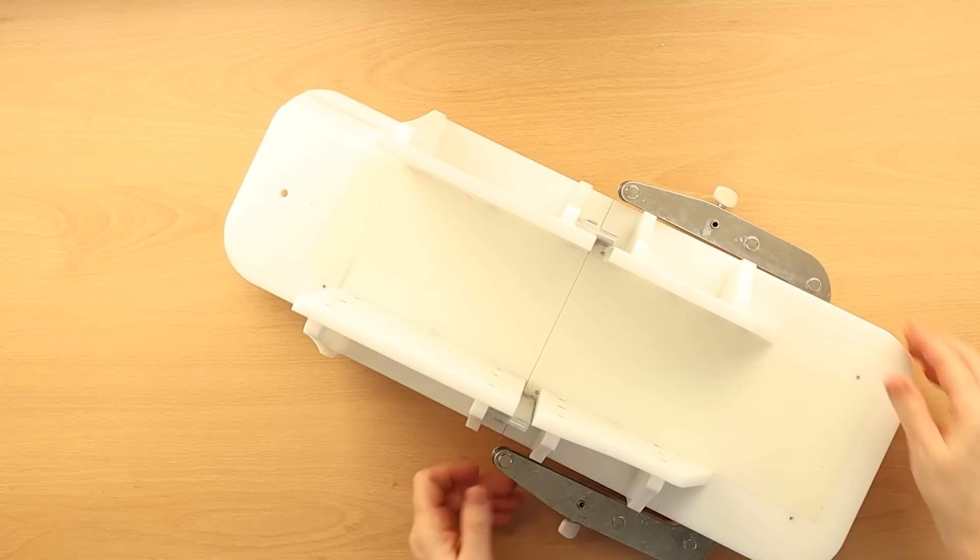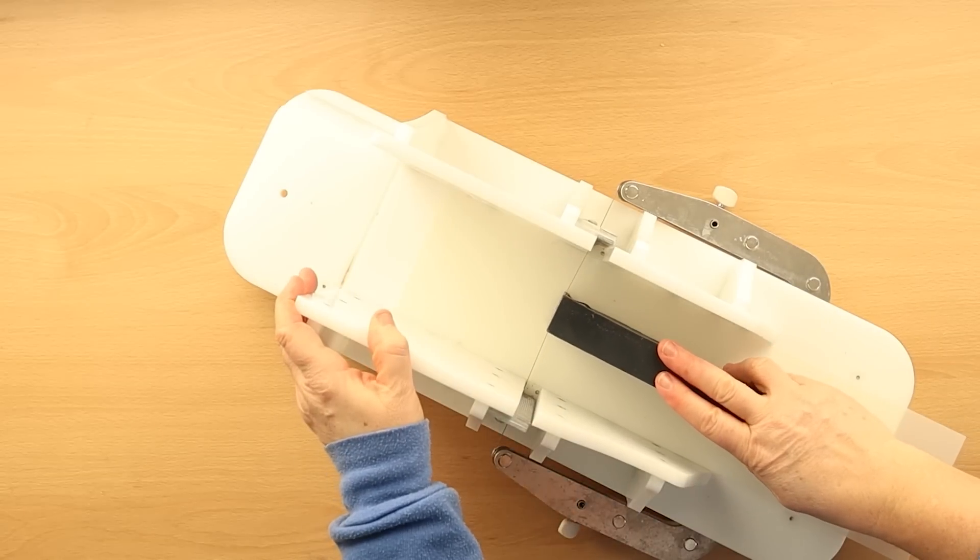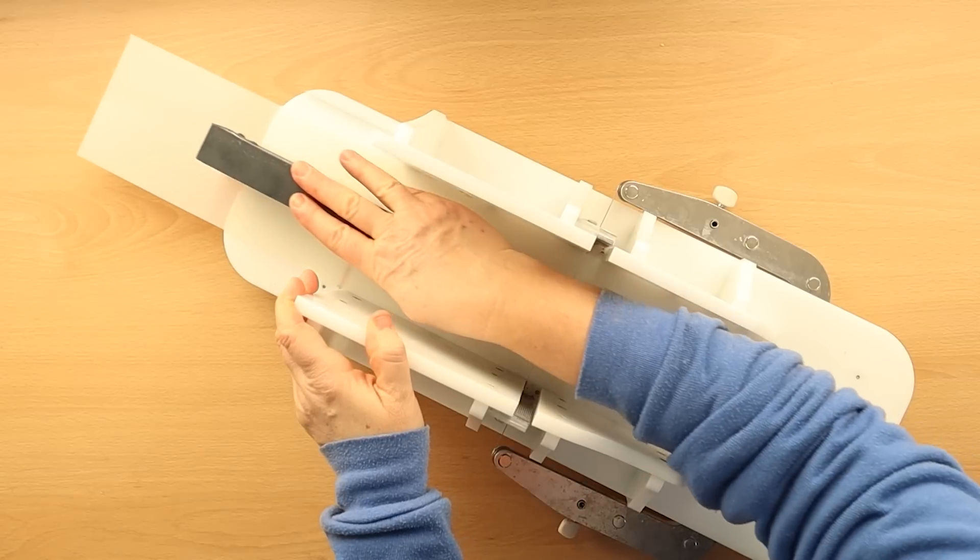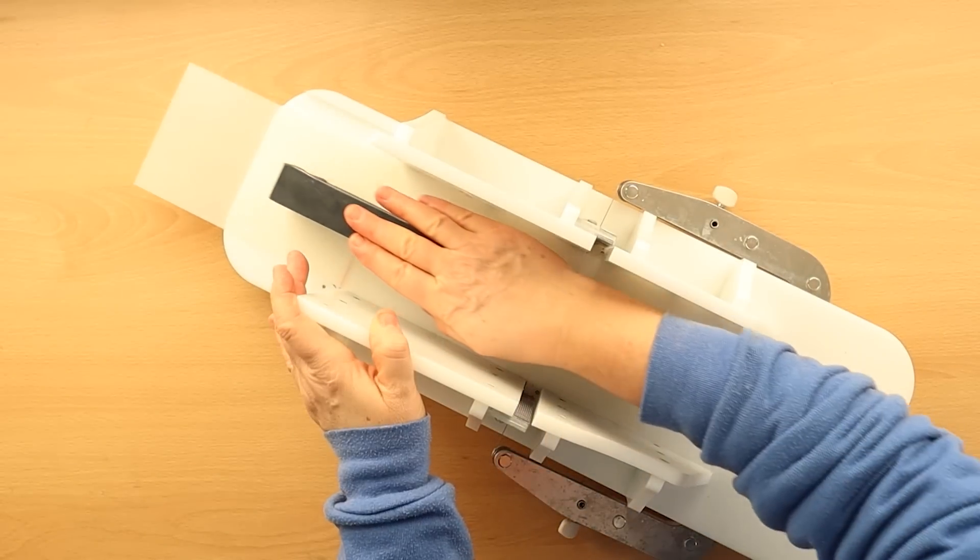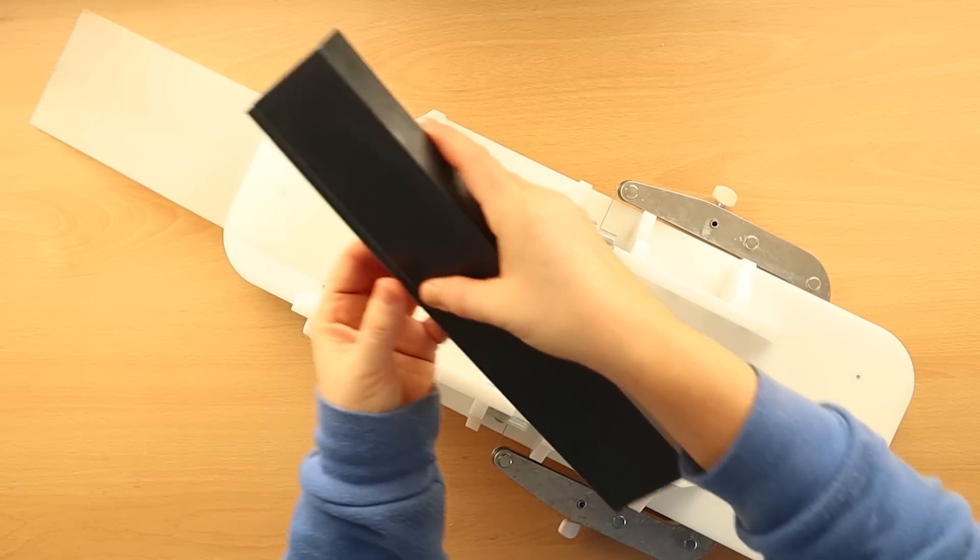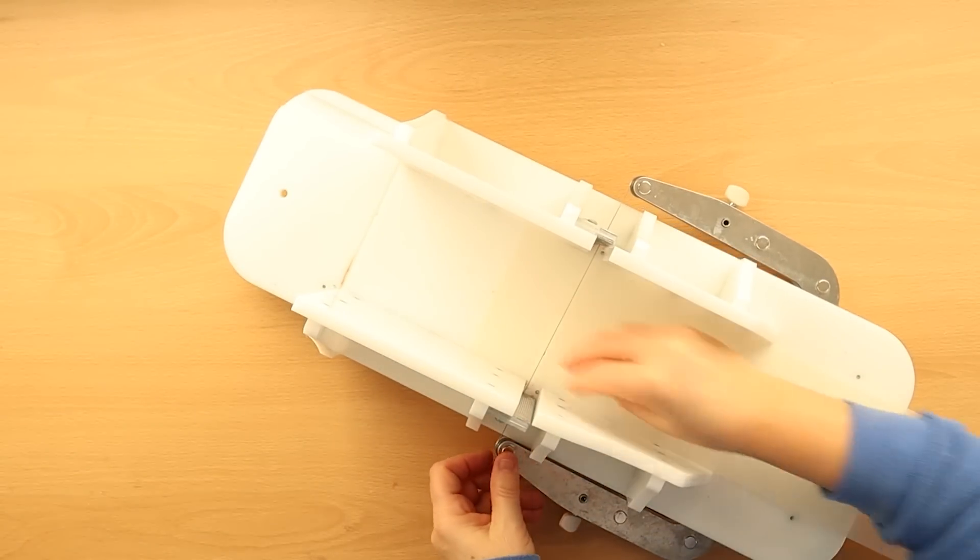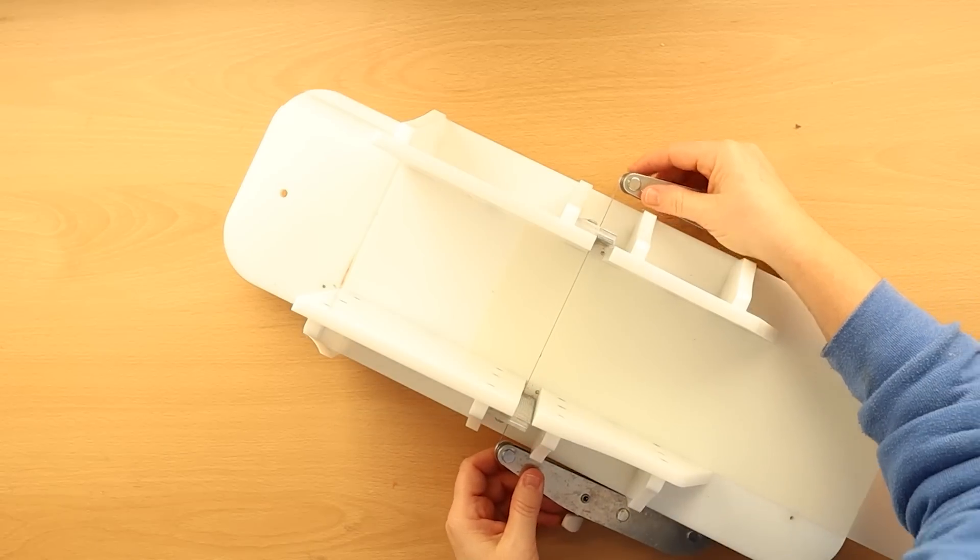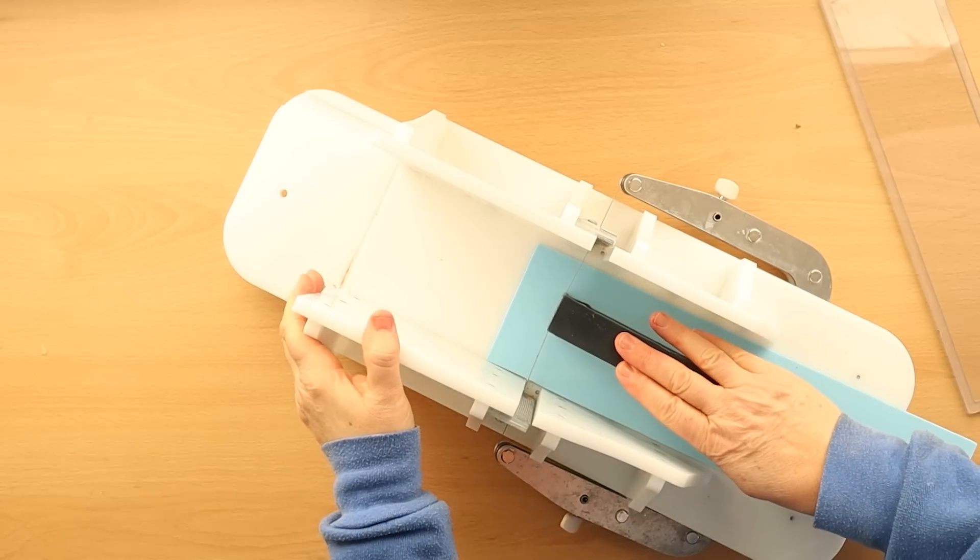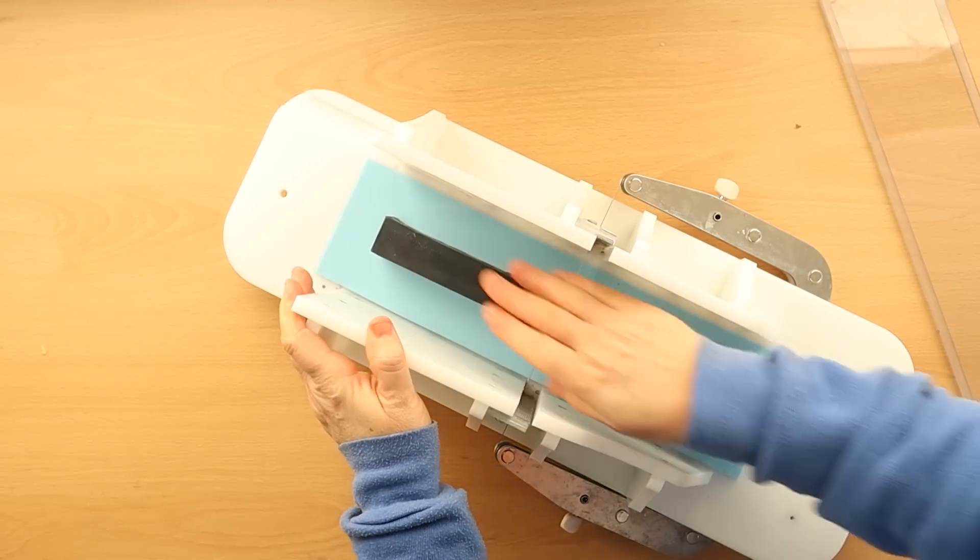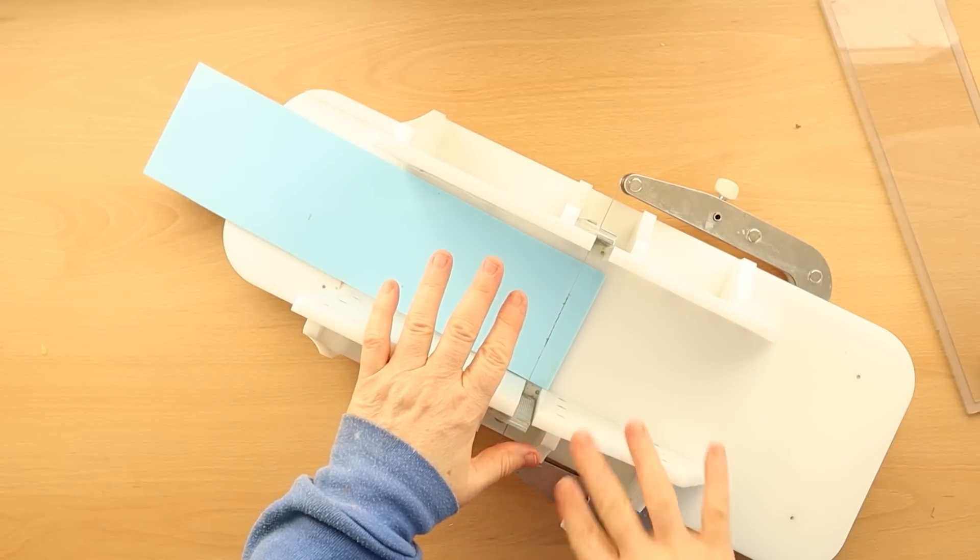This first one's set to my half centimeter to get that sliced off. I need two at half a centimeter and then I need three at one centimeter. So let's pop this up a bit. I've just had to put a shim in there to get it to the right thickness.